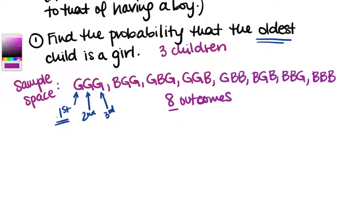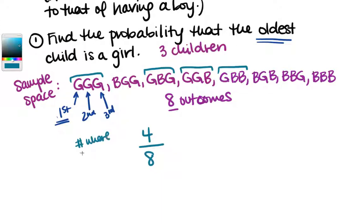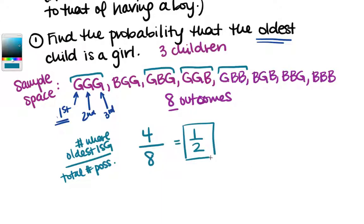Find the probability that the oldest child is a girl. We need to find outcomes where the first child listed is a girl: GGG, GBG, GGB, GBB — that's 4 possibilities where the oldest child is a girl. So the probability is 4 over 8, which reduces to 1/2. In terms we've heard before, there's a 50-50 chance of the oldest child being a girl.